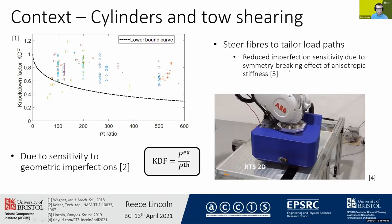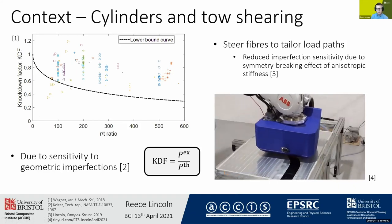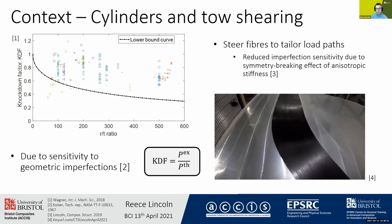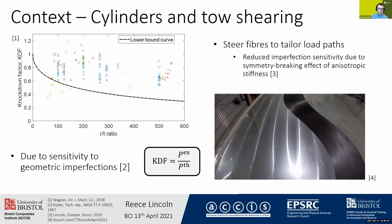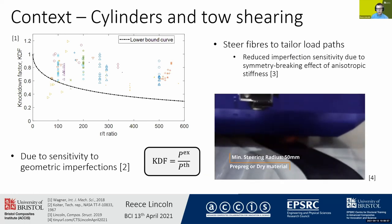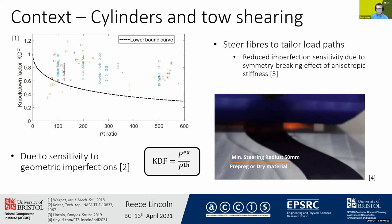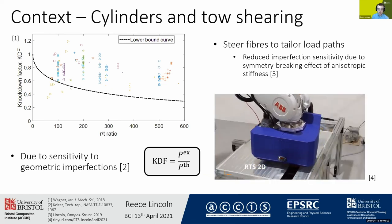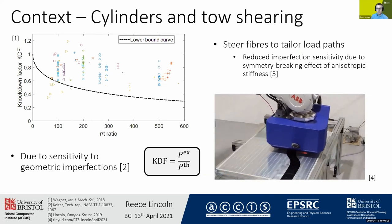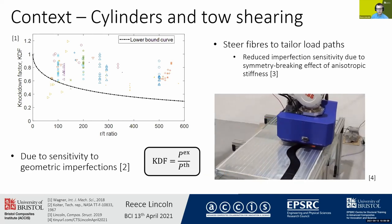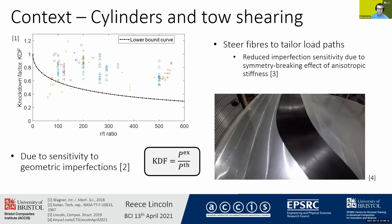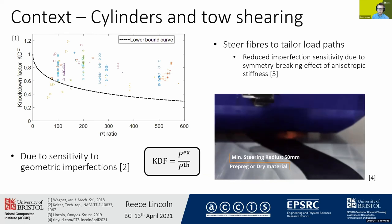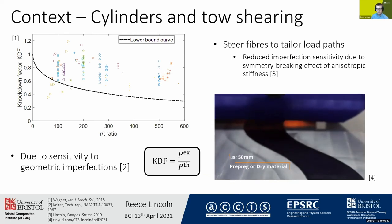A little bit of context as to why we might want to use CTS in cylinders: cylinders in axial compression show a large discrepancy between theoretical predictions and experimental results, and because of this there is a large spread of knockdown factors, which is the ratio between these two results. What we really want to do is make these cylinders not sensitive to imperfections, which has been shown to be one of the key leading factors for that large discrepancy between experimental and theoretical results.